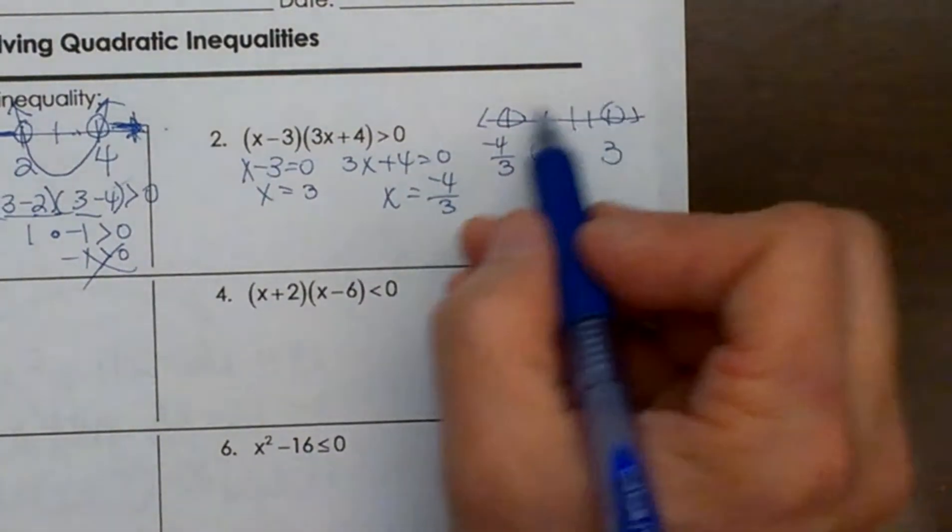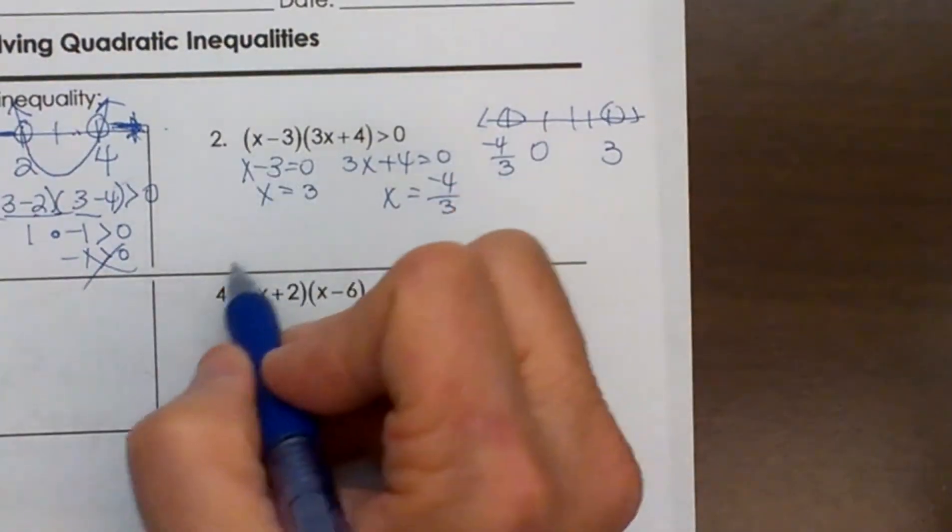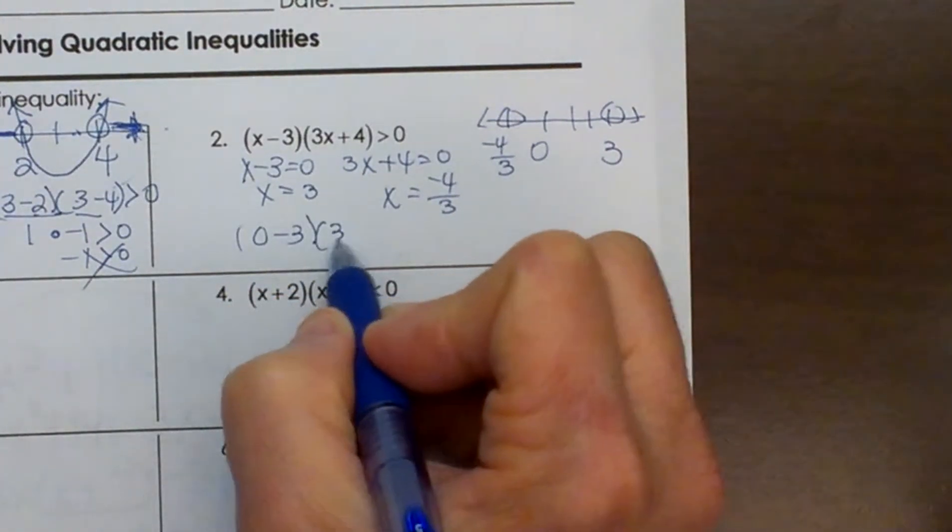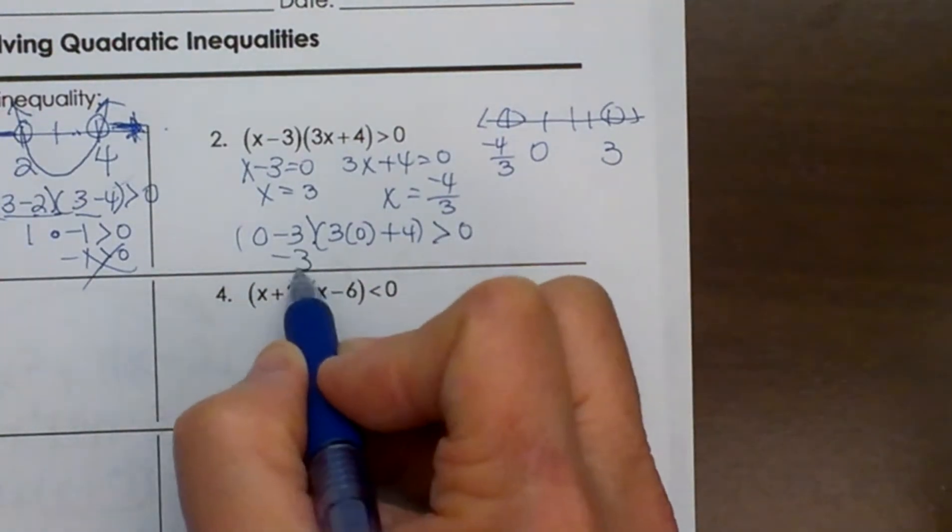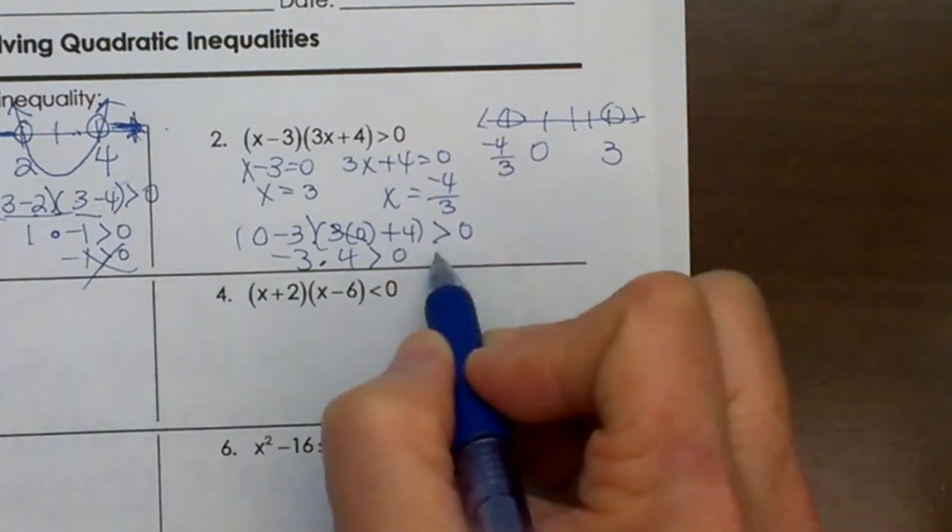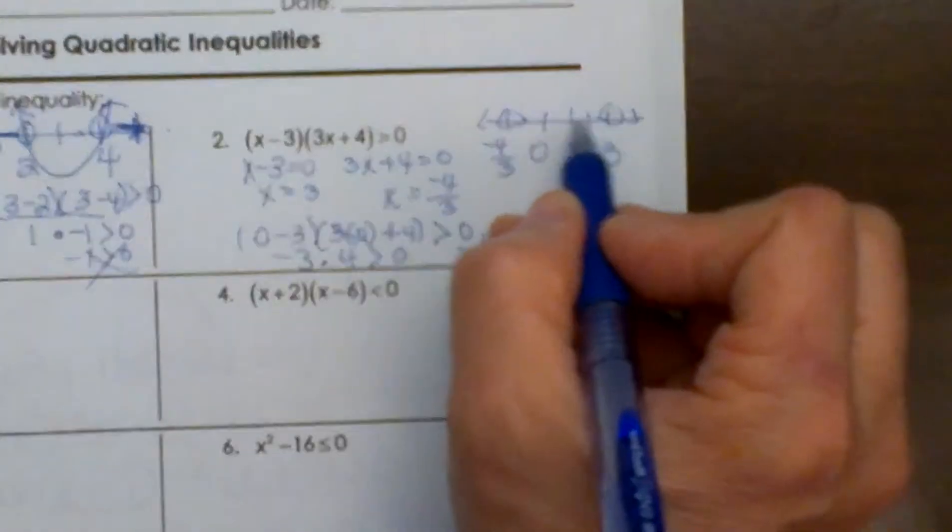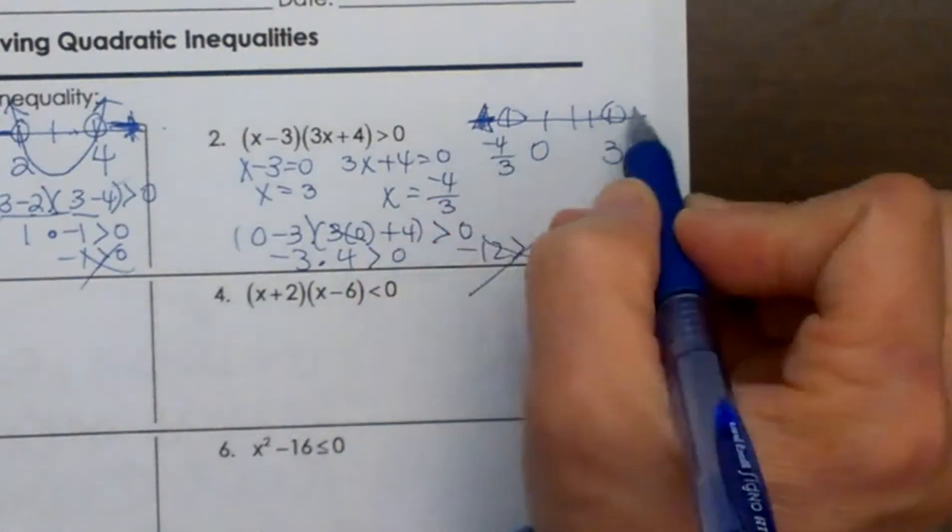Now let's test a point. Well the nice point in the middle to test would probably be 0. That 0 is nice and easy. So 0 minus 3 times 3 times 0 plus 4. Is that greater than 0? So you have negative 3 times 4 is negative 12. Is negative 12 greater than 0? No. So I am not shading in between.